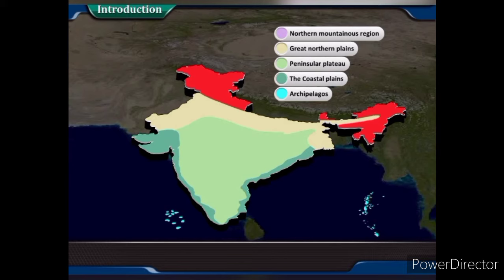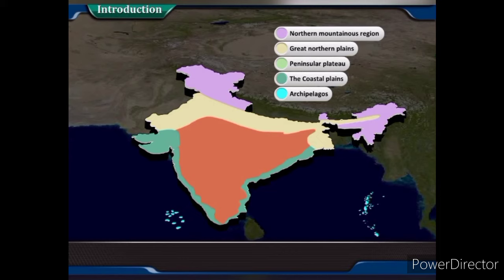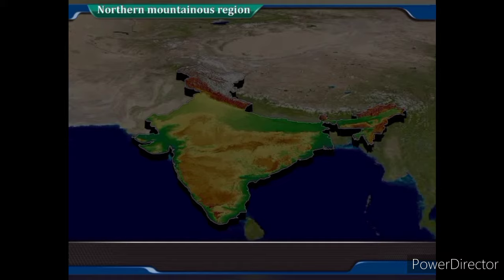The physiographic regions of India are: 1. Northern Mountainous Region, 2. Great Northern Plains, 3. Peninsular Plateau, 4. The Coastal Plains, and 5. Archipelagos.